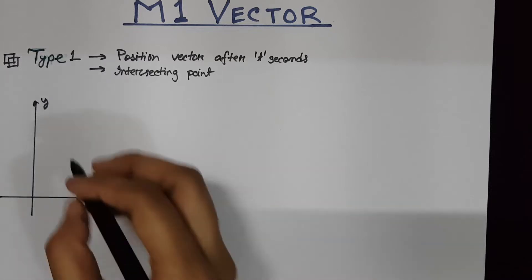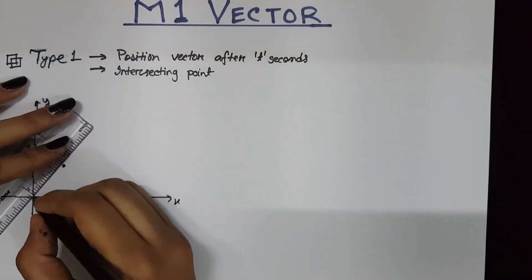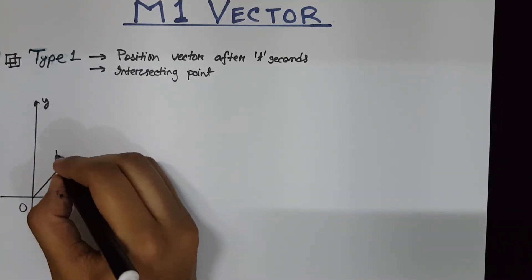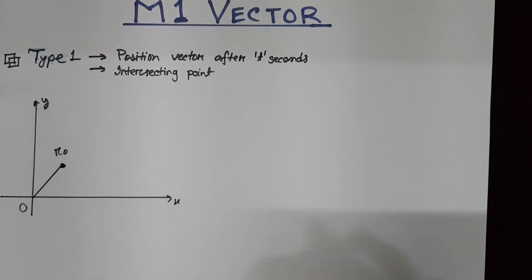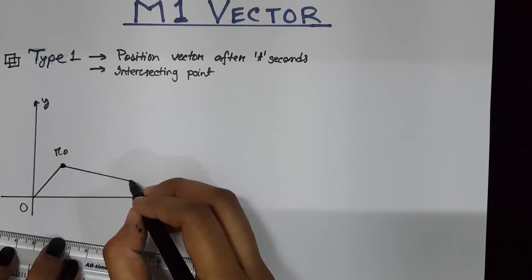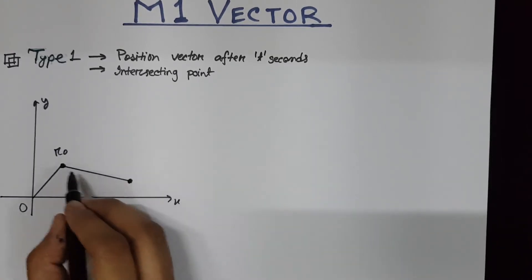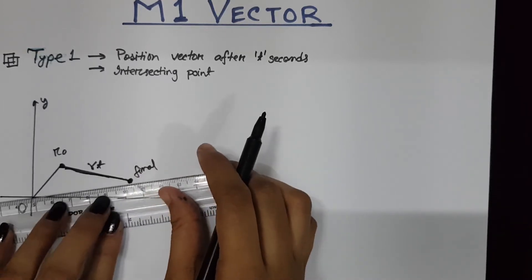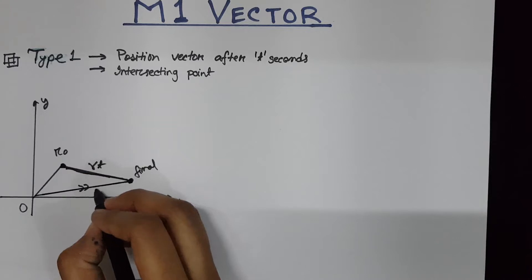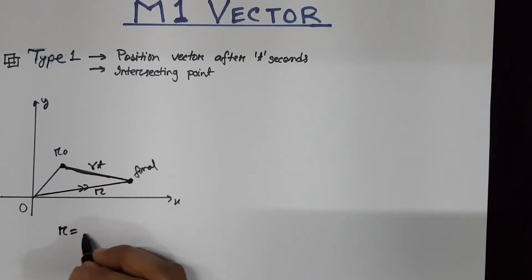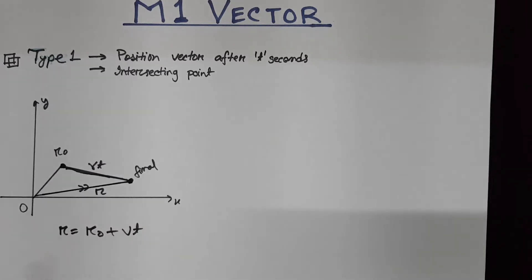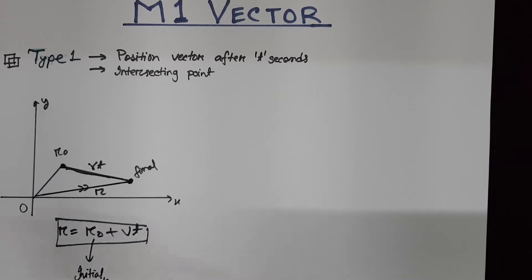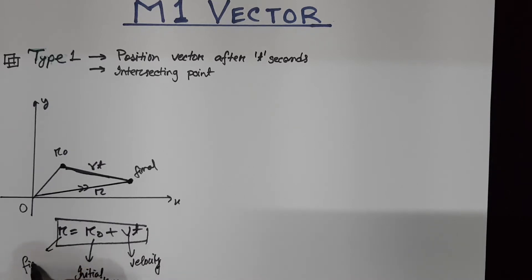Suppose we have a point here initially. All positions are usually measured from the origin, so the initial position is denoted by the notation R0. After a certain time duration, the particle has moved to a different position — this is your second position. The displacement here is Vt. If we need to find the final position R from the origin, the formula is R = R0 + Vt, where R0 is the initial position, V is the constant velocity, and R is the final position.